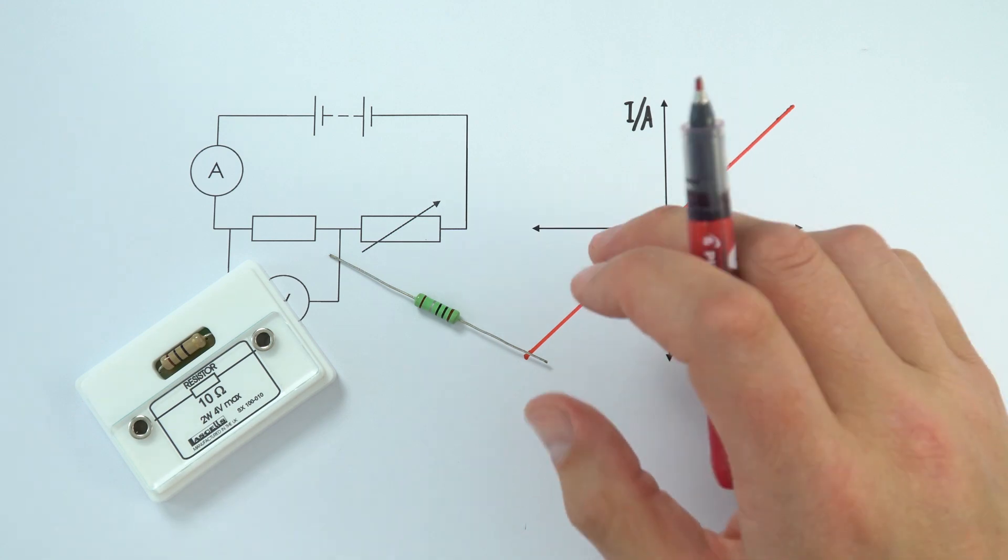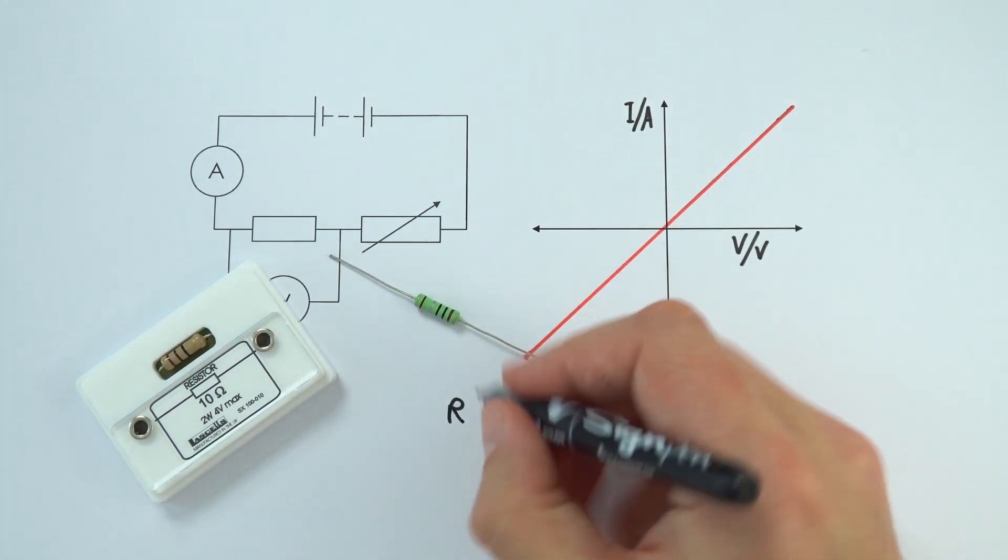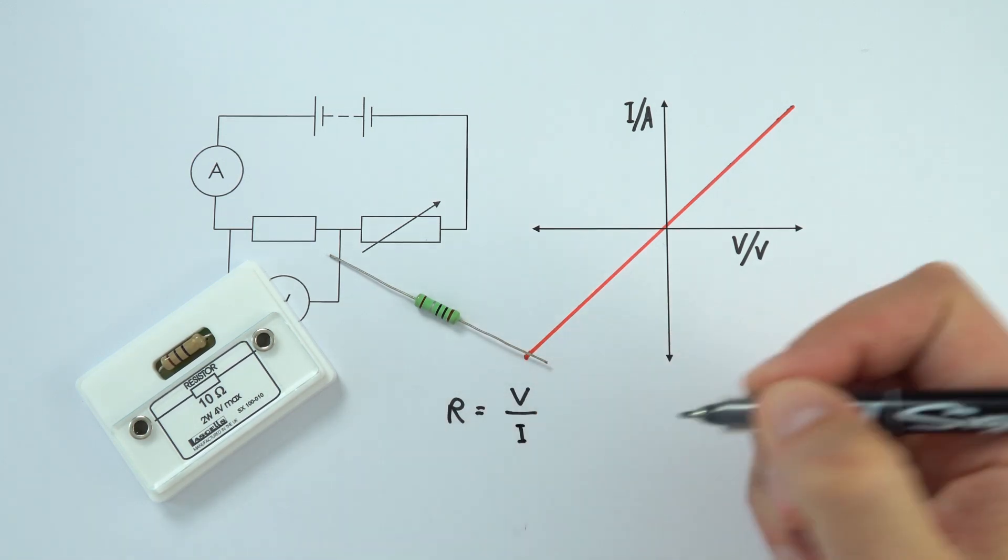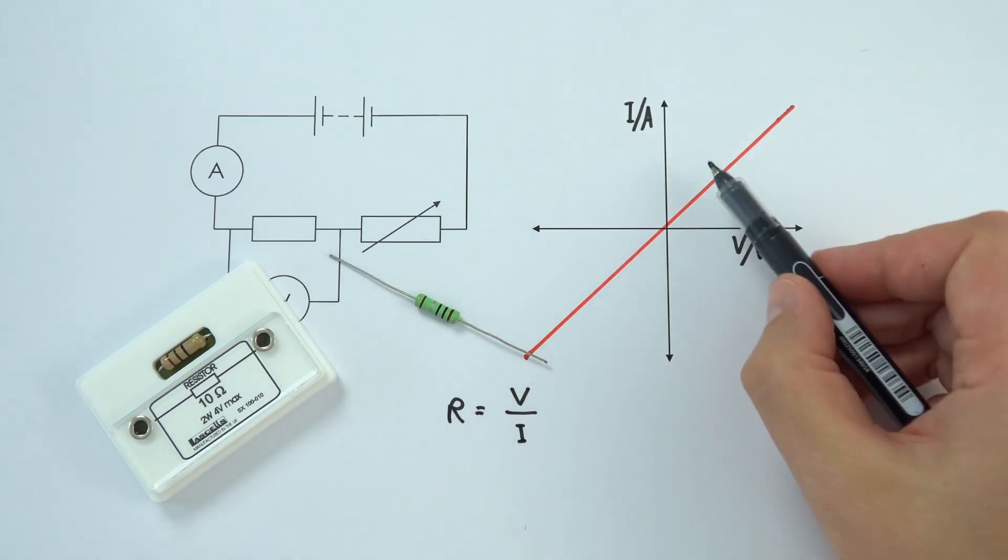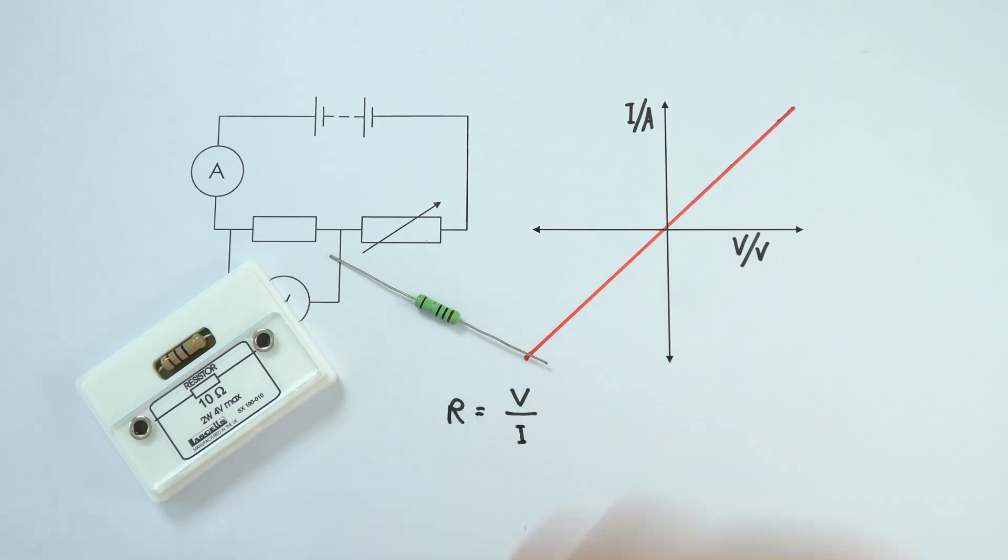That means its resistance stays the same. There's an equation - this is actually the definition of resistance - that states resistance equals the potential difference across a component divided by the current through it. Because V is proportional to I, the value of resistance remains constant.